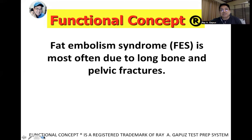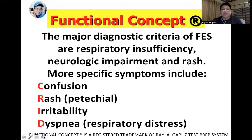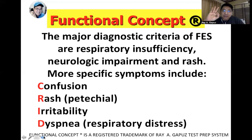Fat embolism syndrome is most often due to long bone and pelvic fractures. So these are the things we need to look for if we suspect fat embolism in our client — we have to check whether the client had a history of falls or history of hip arthroplasty. There are three major diagnostic criteria of fat embolism syndrome: respiratory insufficiency, neurologic impairment, and the presence of rash. When you see these three, look for the specific symptoms contained in the acronym CREED.